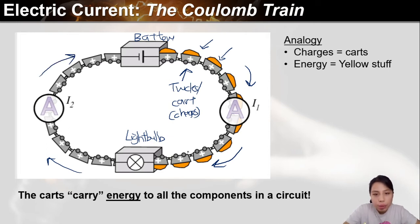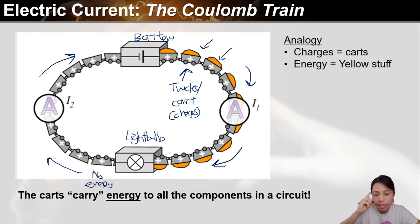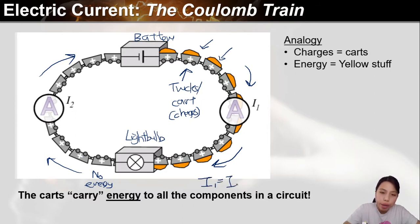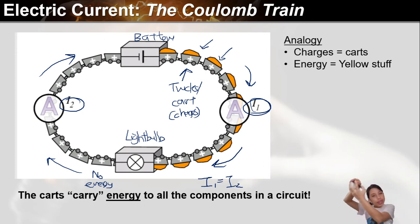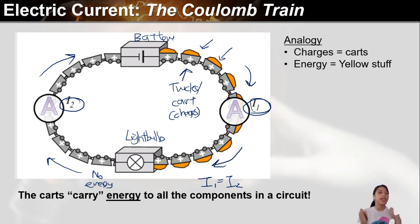Notice how all the energy goes to the light bulb — it dumps all the energy in, then comes out with no energy anymore. The current I1 equals I2, meaning the current measured on the right side is the same as on the left side. This is a coulomb train — a whole bunch of charges working hard to move energy from the battery to a component like a light bulb, then dumping all the energy there.